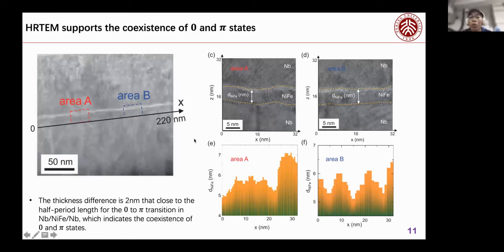To verify our assumption, we do the high-resolution TEM experiment. You can see we choose two different areas, area A and area B. From these two data figures, we can know the thickness difference is about 2 nanometers, and this is very close to the half-period length for the zero to π transition in the niobium-palladium Josephson junction. This indicates the coexistence of zero and π states, which can verify our assumption that the coexistence of zero and π states is the most possible mechanism.